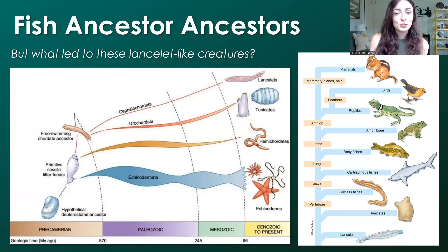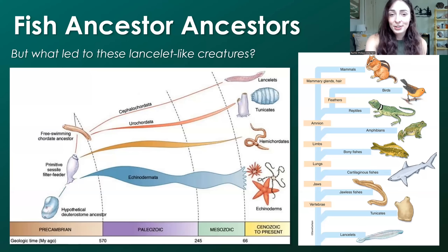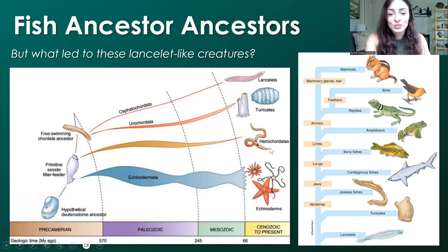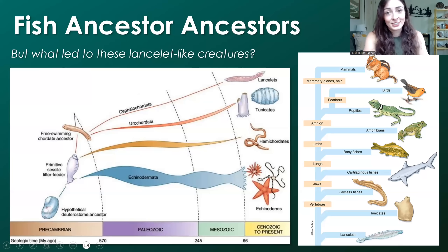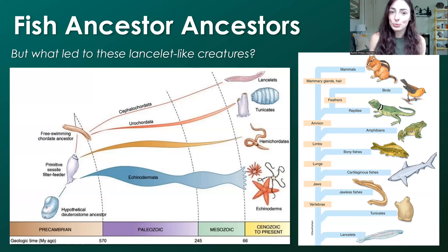If you'd like me to do a future video on this, I'd love to dive into the topic. I find it extremely interesting that our closest invertebrate phyla relatives are hemichordates, like worm-like creatures, and echinoderms, like sea stars, sea urchins, and sand dollars. That seems insane, but I'd love to explore that relationship further. Let me know, and thank you so much for watching — I'll see you guys in my next one!